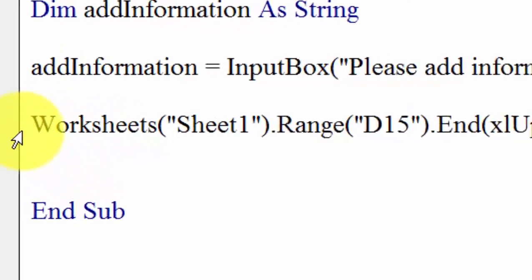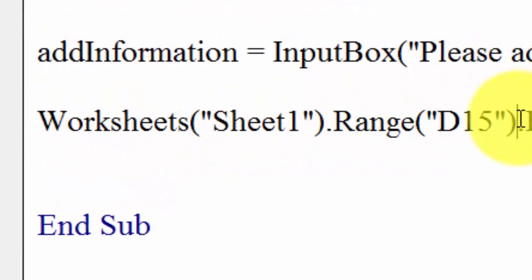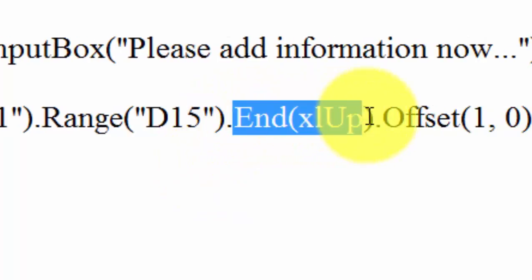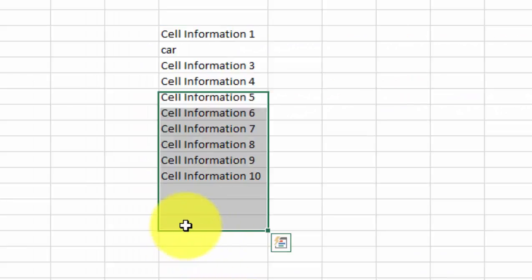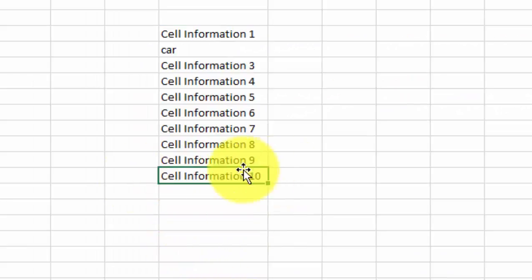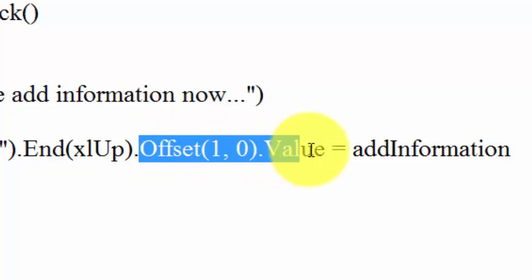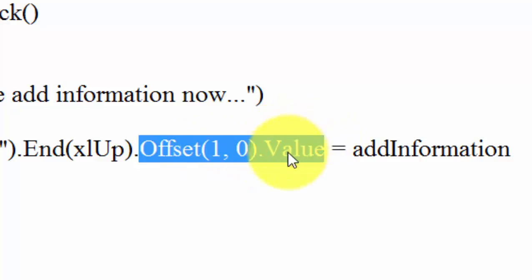Let's break this down. Range("D15") takes us to cell D15. End(xlUp) moves up from D15 to the nearest cell that contains information and selects that cell. Offset(1, 0) then offsets down by one row, and finally the Value assignment adds the AddInformation variable into that cell.